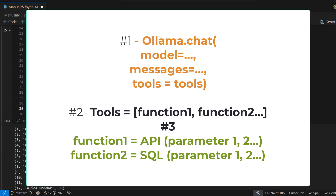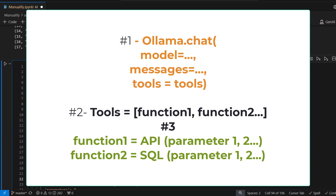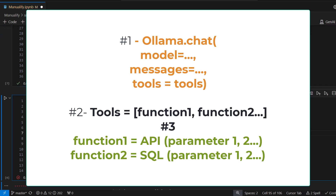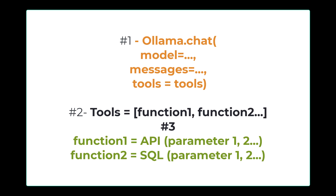Just to recap at a high level: ollama.chat has a new parameter called tools. Tools is a sequence of functions, and each function can be totally unrelated and perform a separate task — function one could call a weather API, function two could query SQL. These functions accept parameters, which is what makes them so powerful. The remaining piece of the puzzle is how ollama.chat knows which tool to call and when.